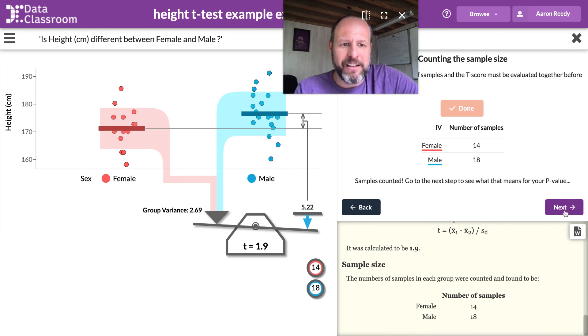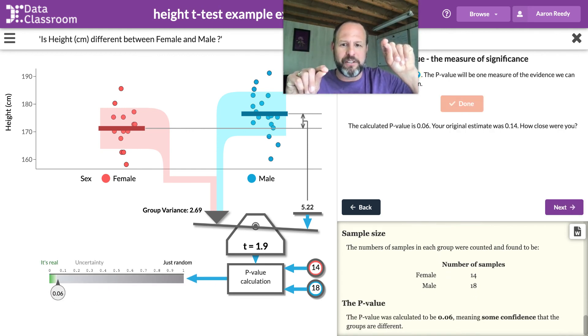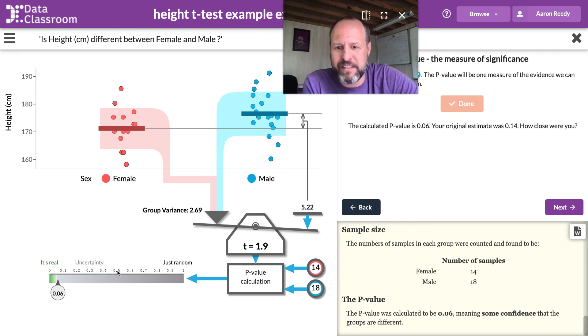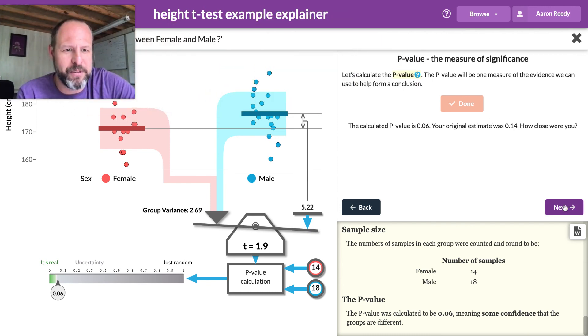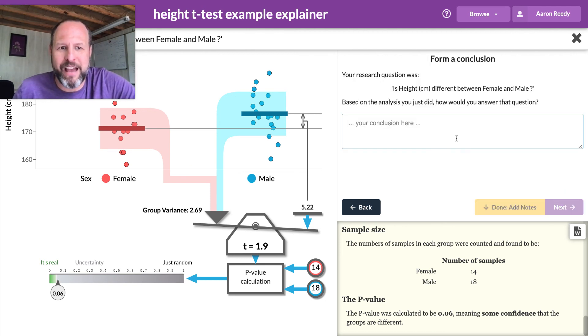I'm going to move this up to the top for a second, and we'll just move it right here. We count the sample size. And this is where if you were doing this old school, you'd be going to a table, and you'd be finding your degrees of freedom that comes from sample size, and you'd be finding your T-score, and you'd be lining them up to see what your p-value is. And in this case, you can see the p-value that came out of this model is 0.06. And so in the dialogue, it says, your original estimate was 0.14. That was my visual estimate. So how close were you? And you start thinking about that. And then you get some scaffolding to help you interpret that p-value. So here it says a p-value of 0.06 means some confidence the groups are different. And this is important to note, this is not below that threshold for statistical significance, which is typically 0.05. This is just above that. But what I think seeing a p-value in this way does for students is it helps them understand that a p-value is not a yes or no answer to a question. It's simply just a measure of the strength of the evidence.